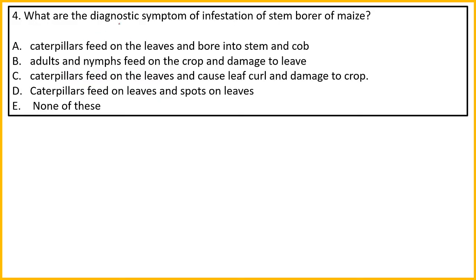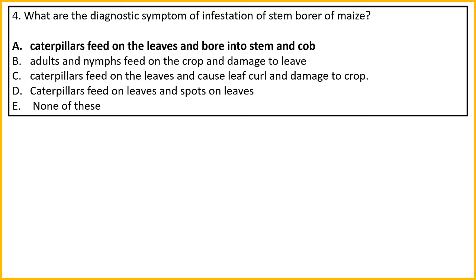Next question: what are the diagnostic symptoms of infestation of stem borers of maize? Option A: Caterpillar feeds on leaves, stem, and cob — boring holes start to develop. Option B: Adults and nymphs feed on crop and damage leaves. Option C: Caterpillar feeds on leaves and leaves develop leaf curl, damaging the crop. The right answer is option A — caterpillar feeds and slowly starts to bore holes, reaching the stem and cob.